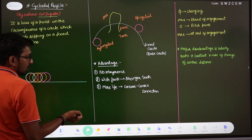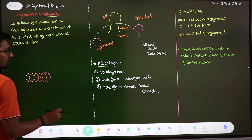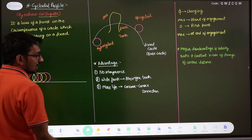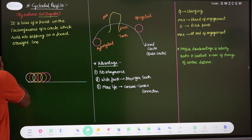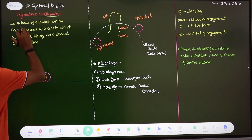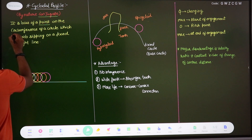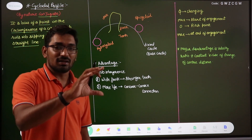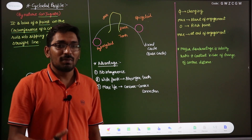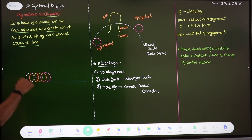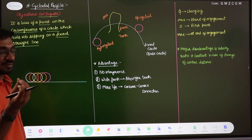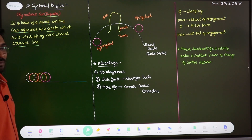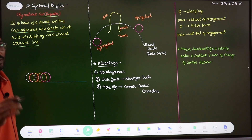Now, how to draw the cycloidal profile? In the involute profile, it is the locus of a point on a line when that line rolls on a fixed circle. In the cycloidal profile, the condition is reversed: it is the locus of a point on the circumference of a circle which rolls without slipping on a fixed straight line. In the involute, the circle is fixed and the line rolls; in the cycloidal, the line is fixed and the circle rolls.